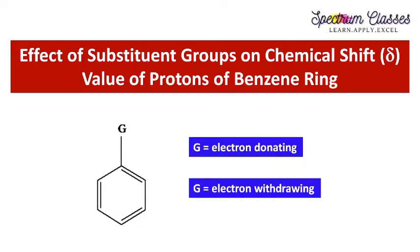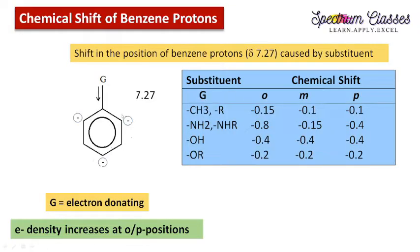Hello everyone, welcome back to Spectrum Classes. This is another video on the topic of NMR. In this video we are going to discuss the effect of substituent groups attached to the benzene ring — how they affect the chemical shift value of the protons attached to the benzene ring. This group may be electron donating or electron withdrawing, and we will discuss both one by one.